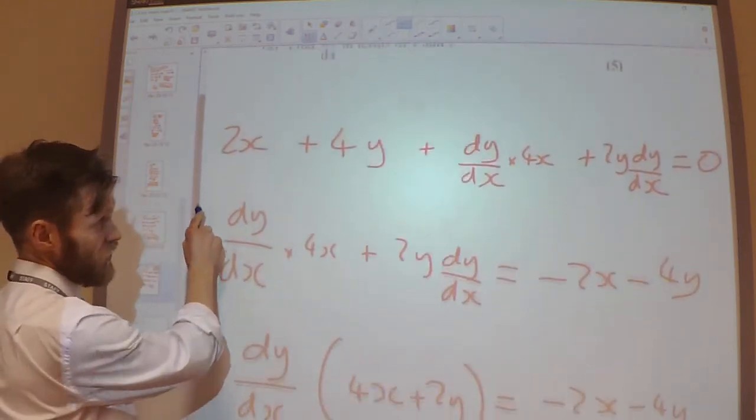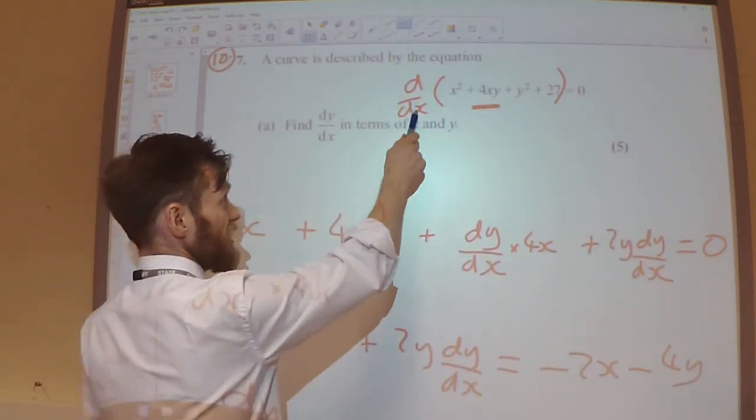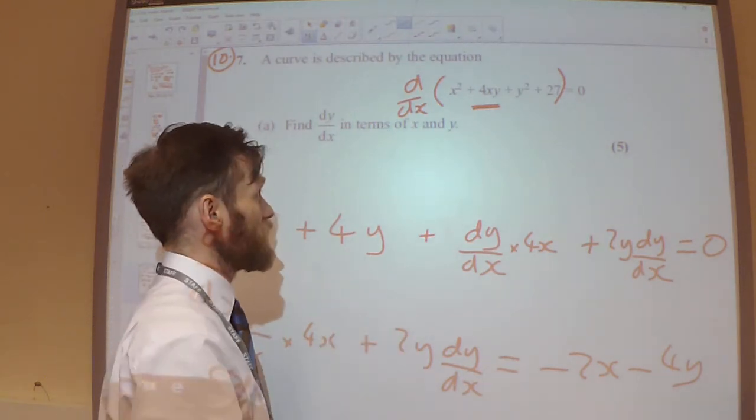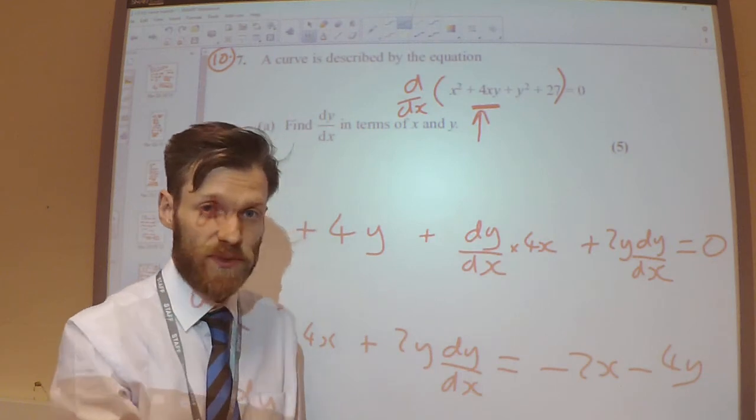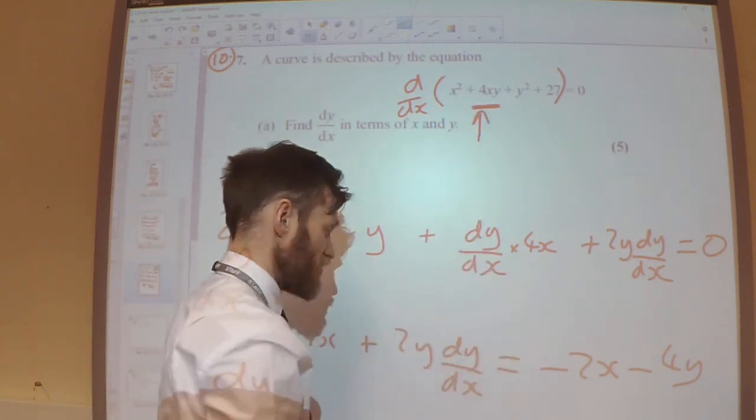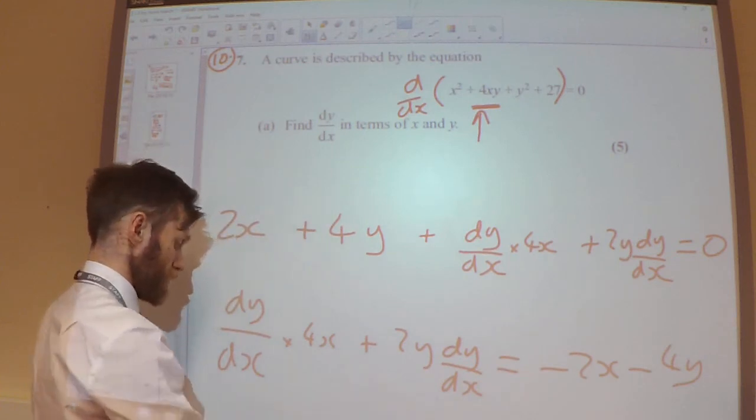The most common mistakes with that question is, like I said, not writing d/dx at the very beginning. The most common mistake was not being really careful with the product rule. Spot that it's the product rule and be really careful with it.